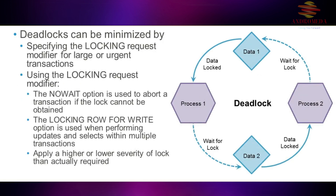Deadlocks can be minimized by specifying the locking request modifier for large or urgent transactions. With this modifier, you can specify the no-wait option, which is used to abort a transaction if the lock cannot be obtained — if it can't get its lock, it won't try to process the transaction.